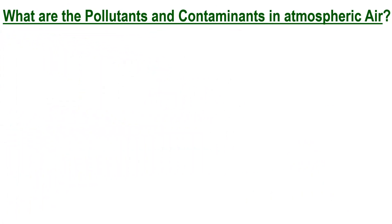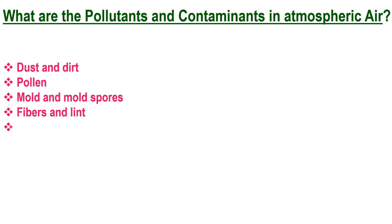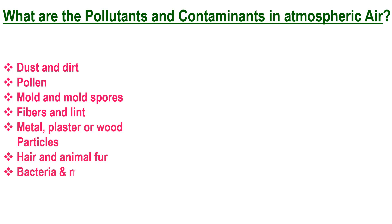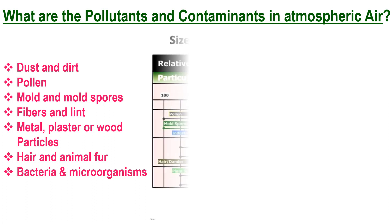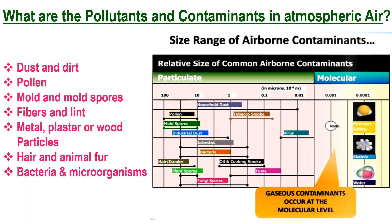Let's look at the pollutants and contaminants found in atmospheric air. These include dust and dirt, pollen, mold and mold spores, fibers, metal, plaster or wood particles, hair and animal fur, and bacteria and microorganisms. We can refer to the table shown here to understand the size of these airborne contaminants.